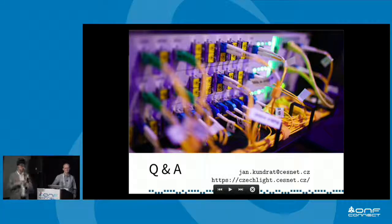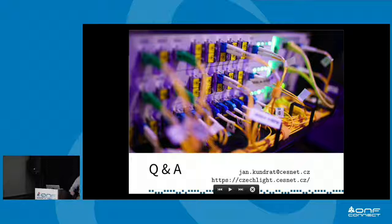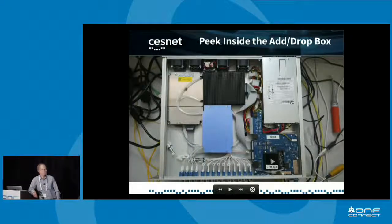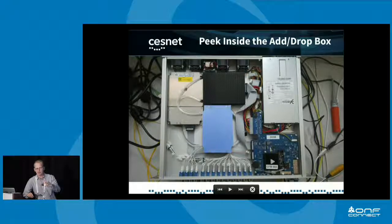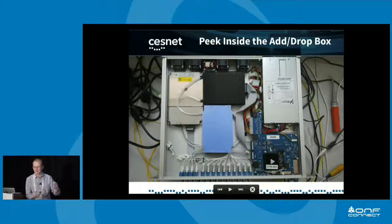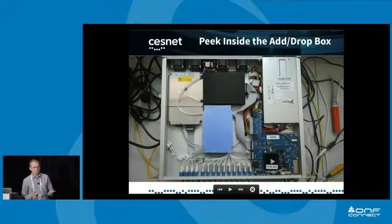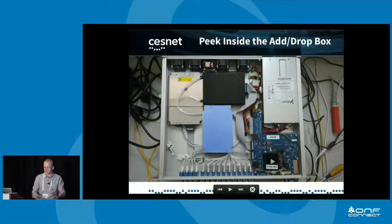An audience member asks whether combining Cessnet's modules with Lumentum's white box in the same ROADM node would be possible. The answer is yes — the goal is full disaggregation, with one pizza-box unit per line direction and one per add-drop. There's no reason not to mix modules; combining these with, for example, a Lumentum white box should be perfectly feasible.